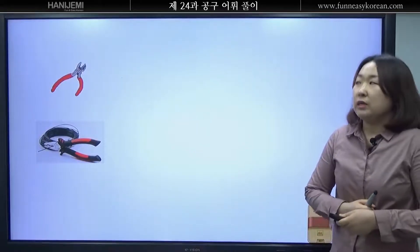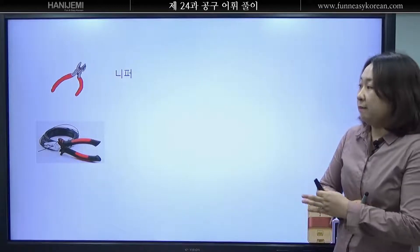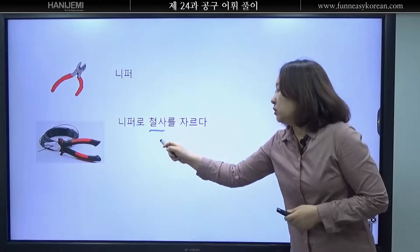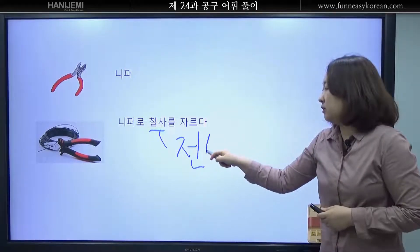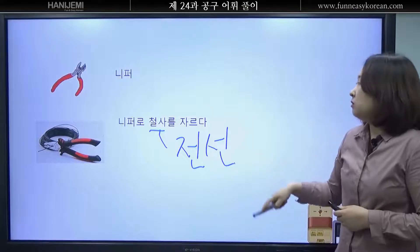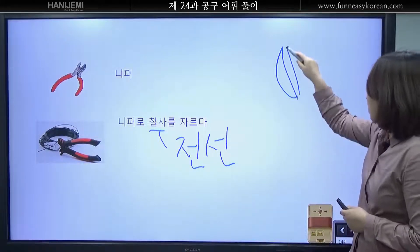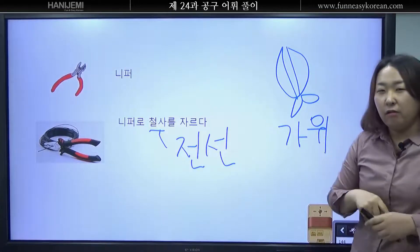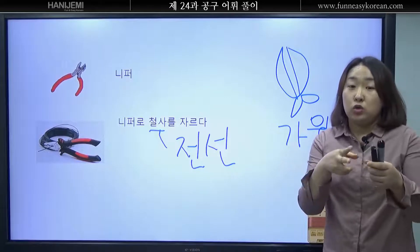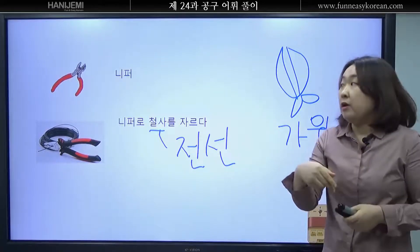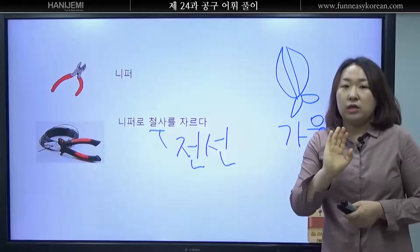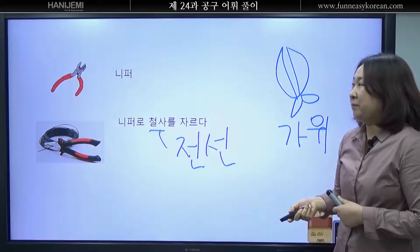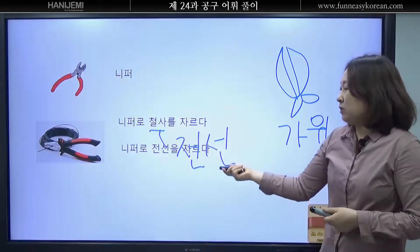여러분 이거는 무엇입니까? 니퍼입니다. 니퍼로 무엇을 합니까? 자 철사를 자릅니다. 또는 전선을 잘라도 괜찮습니다. 가위는 종이는 자를 수 있어요. 하지만 철사나 전선은 가위로 자를 수 없습니다. 무엇이 필요합니까? 니퍼가 필요합니다. 그래서 니퍼로 전선을 자르다.